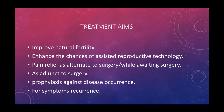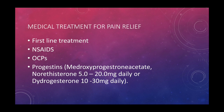Treatment aims to improve fertility, enhance chances of assisted reproductive technology, provide pain relief as an alternative to or while awaiting surgery, and protect against disease recurrence. First-line medical treatment for pain relief includes NSAIDs, OCPs, and progestogens — medroxyprogesterone acetate, norethisterone 5 to 10 mg daily, and dydrogesterone 10 to 30 mg daily.